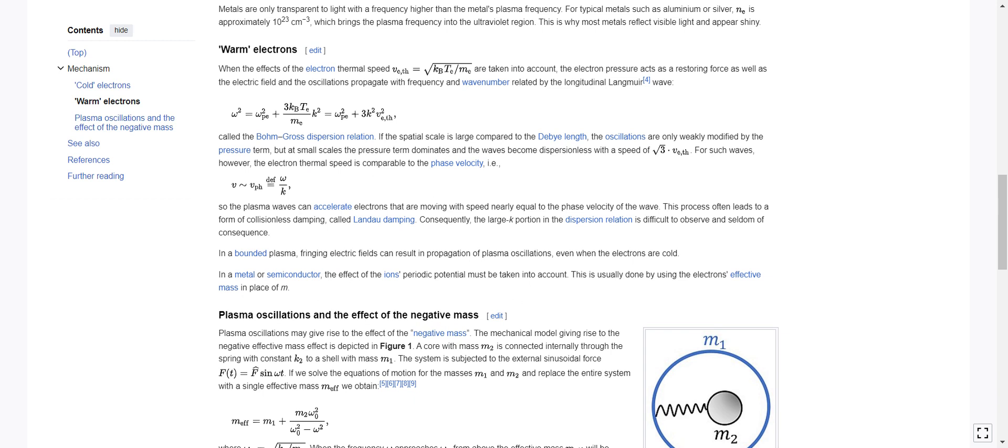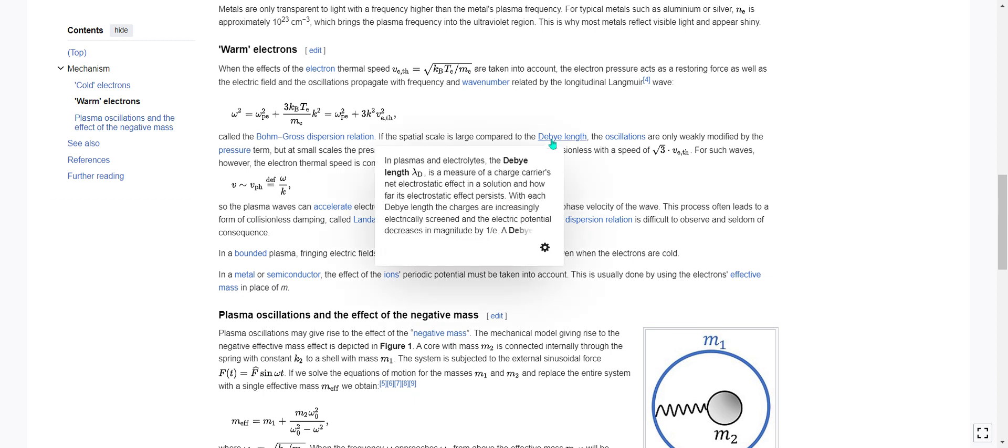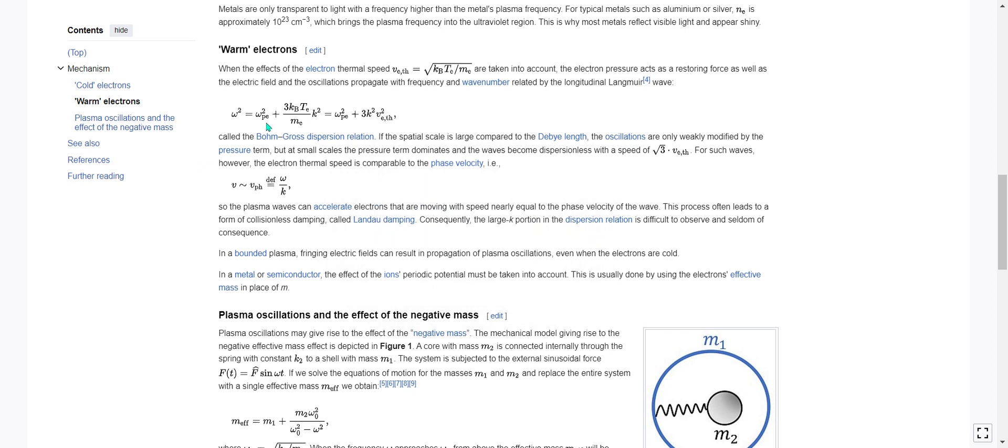If the spatial scale is large compared to the Debye length, I'm just going to pronounce it Debye, sorry if it's wrong and bothers you. If the spatial scale is large compared to the Debye length, the oscillations are only weakly modified by the pressure term. But at small scales, the pressure term dominates and the wave becomes dispersionless with a speed of root 3 times the thermal electron velocity.